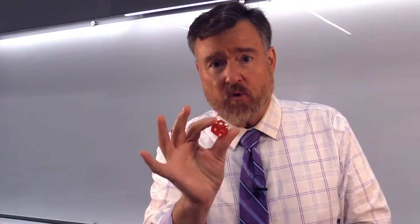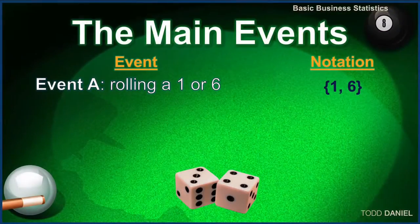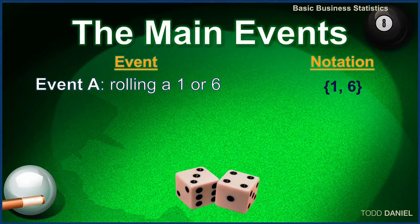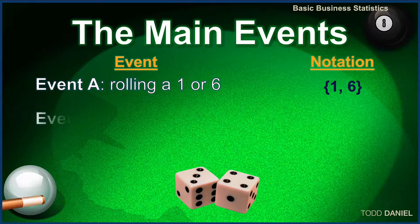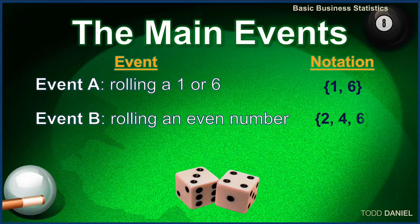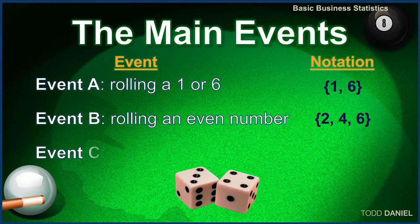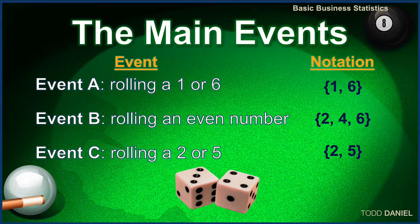Let's begin with the roll of the die, and I have established three possible events. Event A is rolling a one or a six. Event B is rolling an even number, and Event C is rolling either a two or a five.